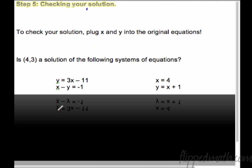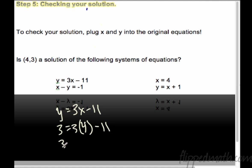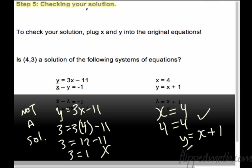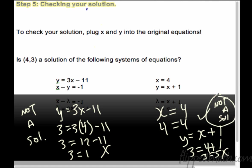Is (4, 3) a solution to the following systems of equations? For y equals 3x minus 11, plug in x equals 4 and y equals 3: is 3 equal to 12 minus 11? Is 3 equal to 1? No — so that is not a solution. For x equals 4 and y equals x plus 1: plug in 4 for x — is 4 equal to 4? Yes. But then check y equals x plus 1: does 3 equal 4 plus 1? Is 3 equal to 5? No — that doesn't work either. So both systems are not a solution — it has to work in both equations.